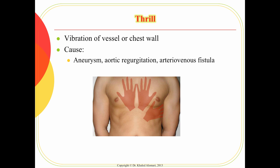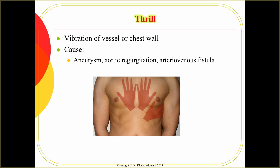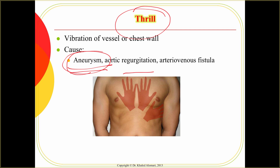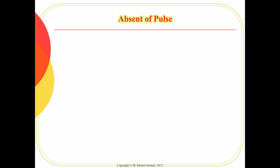Another finding learned in health assessment is the thrill, which is a vibration of the blood vessels. This is mainly associated with aneurysm and can be a serious sign, especially if the patient has a thoracic aneurysm because it could rupture at any point. It can also be associated with murmurs, such as in the case of aortic regurgitation.